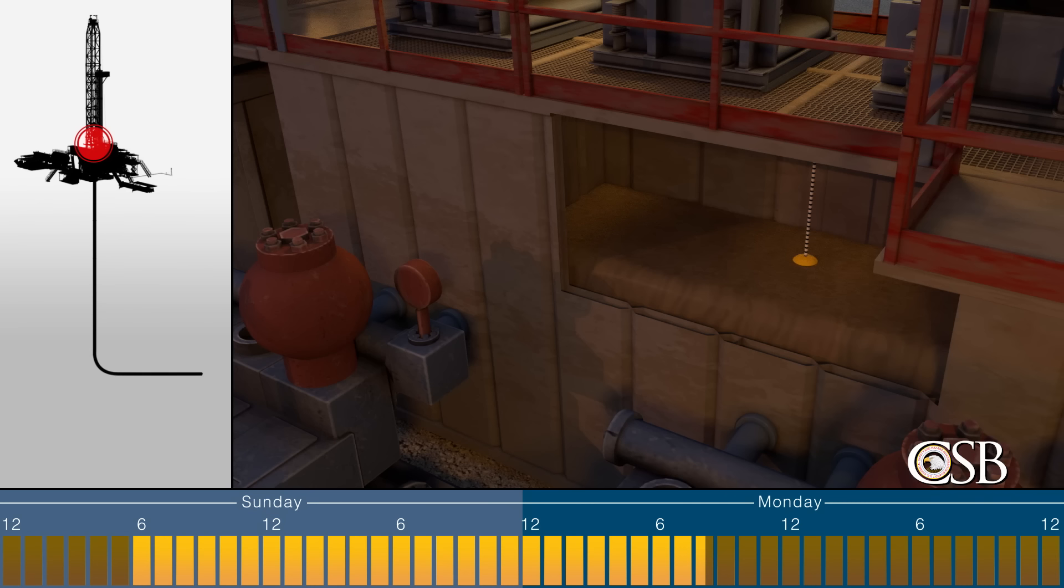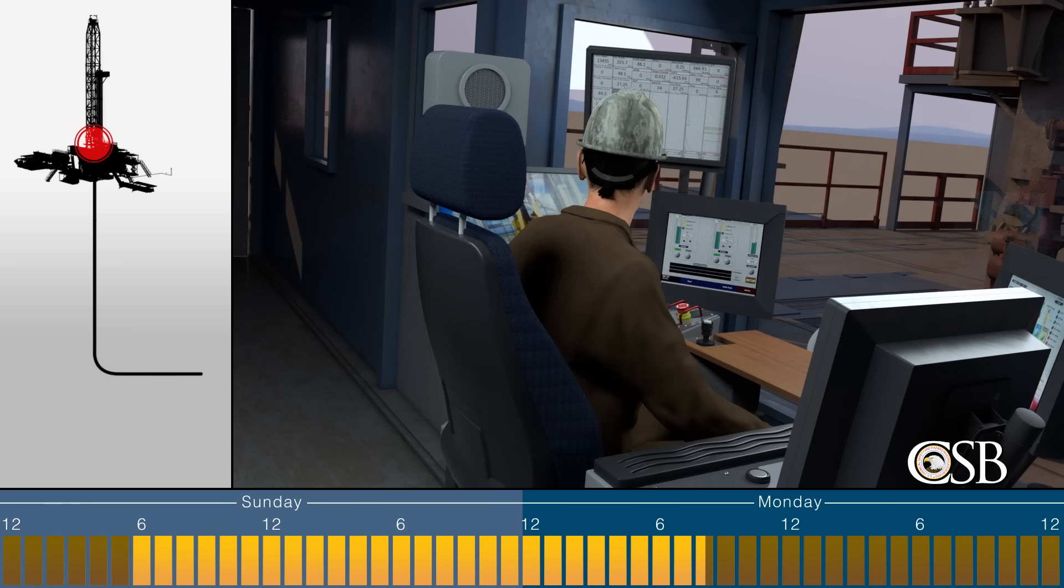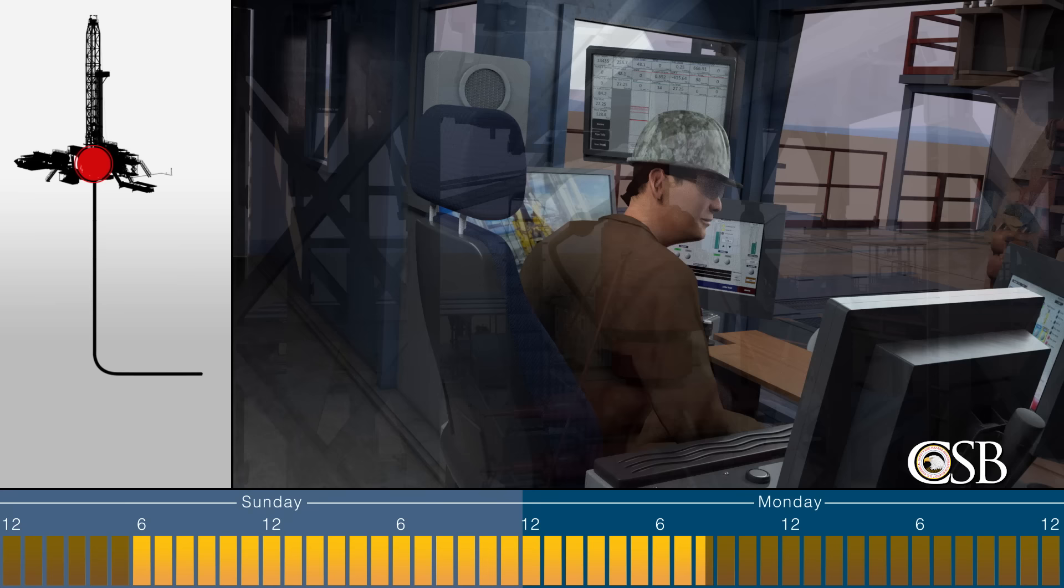Between 7:57 a.m. and 8:35 a.m., while the drilling crew was testing the new bottom hole assembly, the mud pits gained another 102 barrels of mud, a very large volume. This significant gain likely displayed on the driller's data screen. But the day shift driller also chose to turn off the alarm system, and it is unknown if the driller saw this dangerous gain.